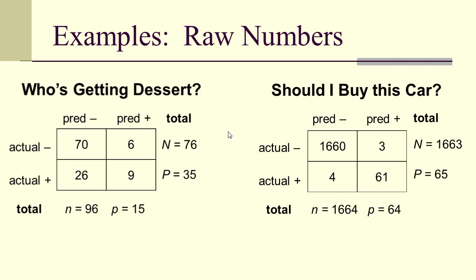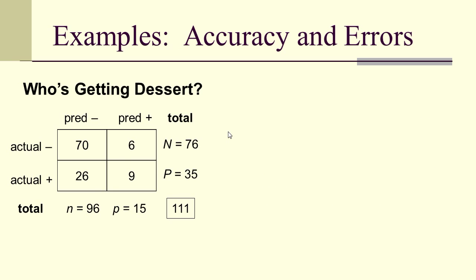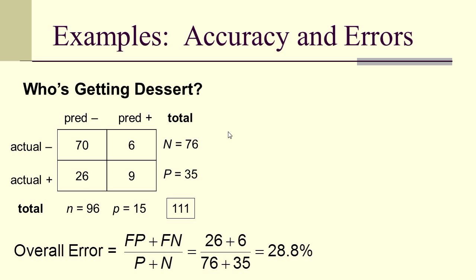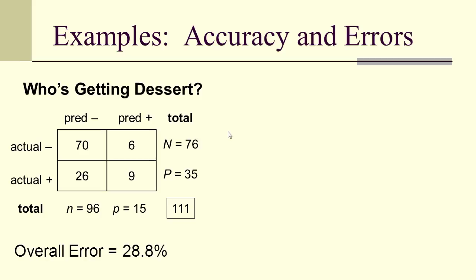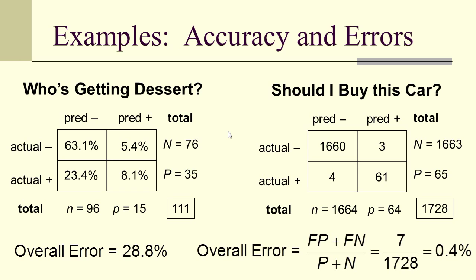We can do the same thing with the should I buy this car data. Going left to right, top to bottom, that's 160 and 3 across the top row, and 4 and 61 on the second row. The total for who's getting dessert is 111. The overall error — the number of false labels — is 26 plus 6 over 111, that's 28.8%. We can divide all entries by 111 to get percentages: 63.1%, 5.4%, 23.4%, 8.1% respectively. For should I buy this car, the overall error was 7 mislabeled over 1,728 total — that's 0.4%, which is pretty good.